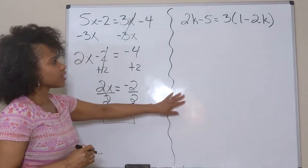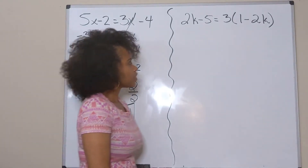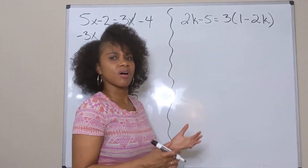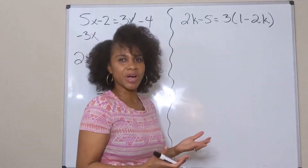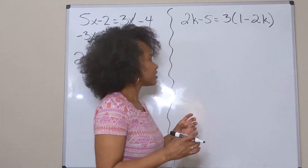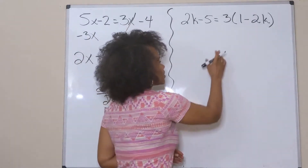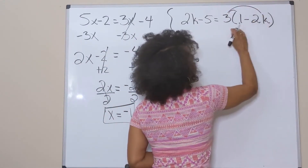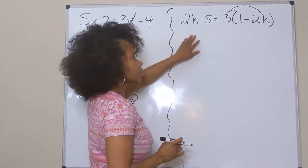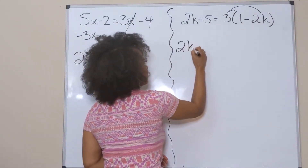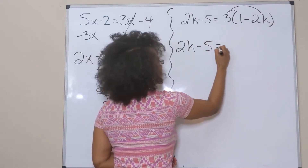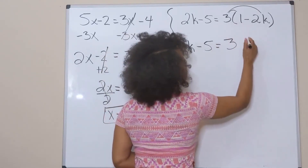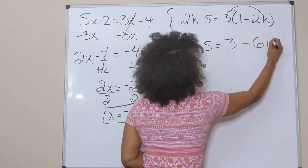The second problem is a little more difficult because it has parentheses. Whenever you see parentheses and want to solve an equation, always think distributive property. The first thing I want to do is distribute the 3 through: I bring down the 2k minus 5 since I'm not using it yet, multiply 3 times 1 to get 3, and 3 times negative 2k gives me negative 6k.